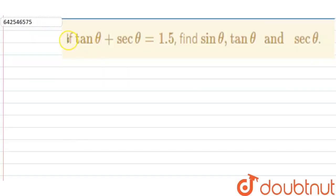Hello everyone, so our question is: if tan θ plus sec θ is equal to 1.5, that means 3 by 2, then find sin θ, tan θ and sec θ. Now, tan θ plus sec θ is equal to 3 by 2. Let's assume this is equation first.